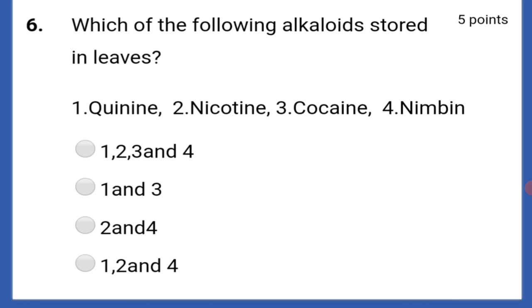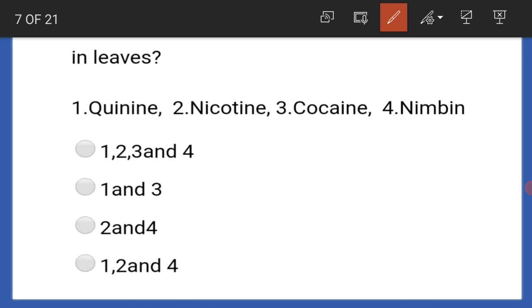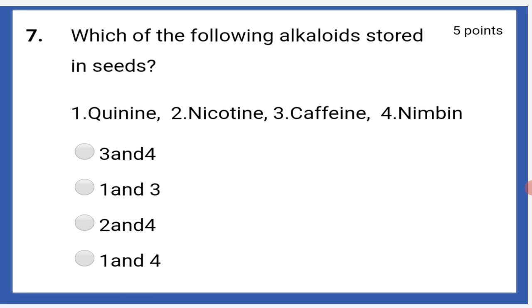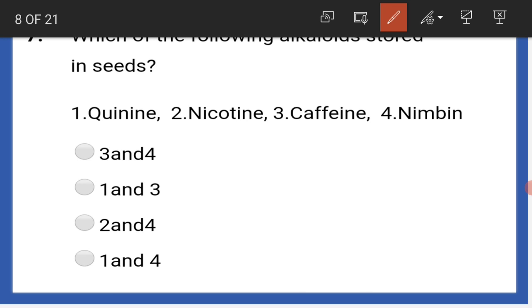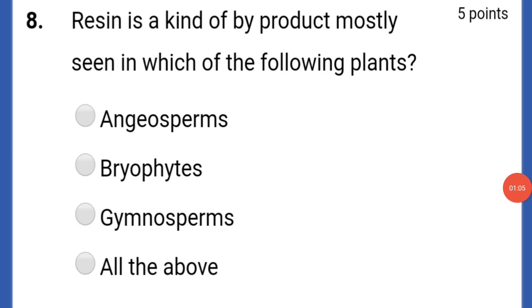Which of the following alkaloids are stored in leaves? Nicotine and nimbine — that is two and four. Which of the following alkaloids are stored in seeds? Caffeine and nimbine — that is three and four.